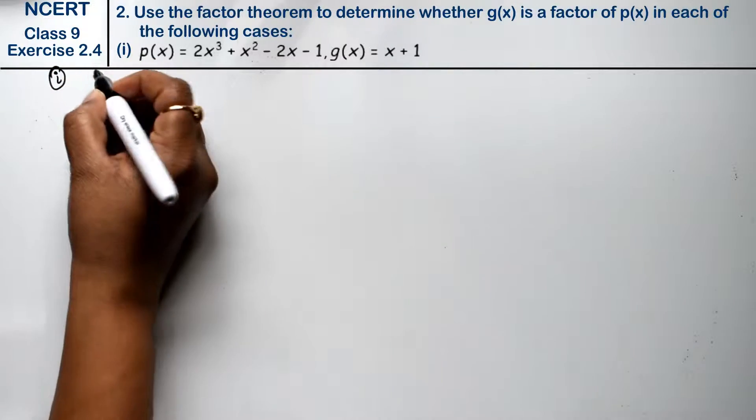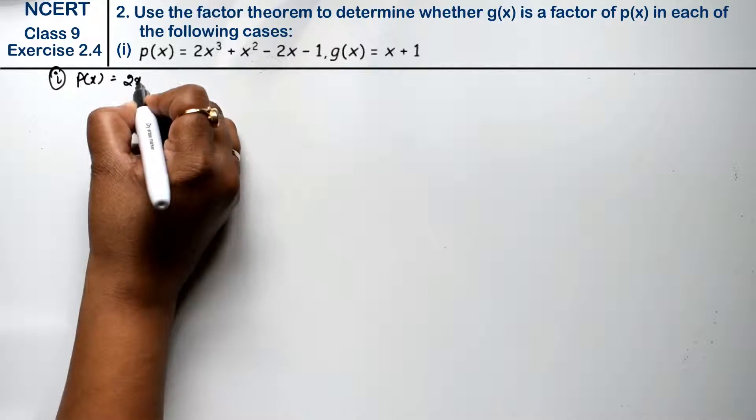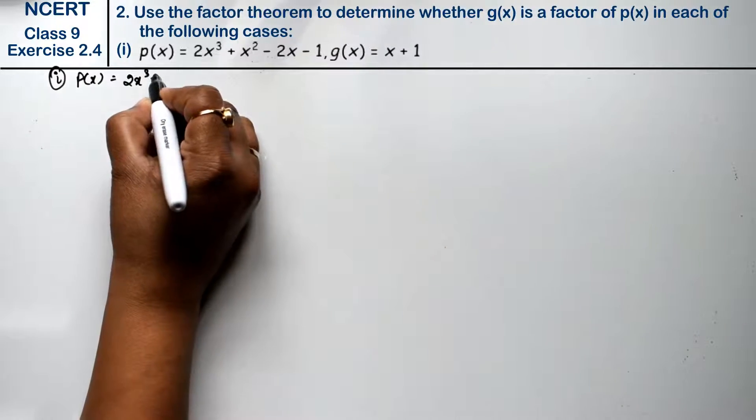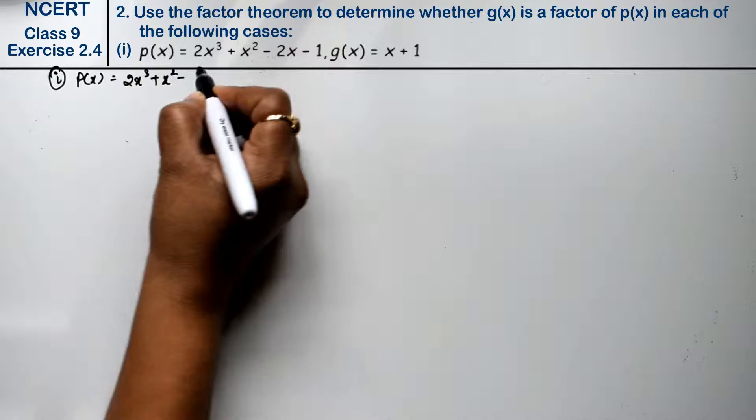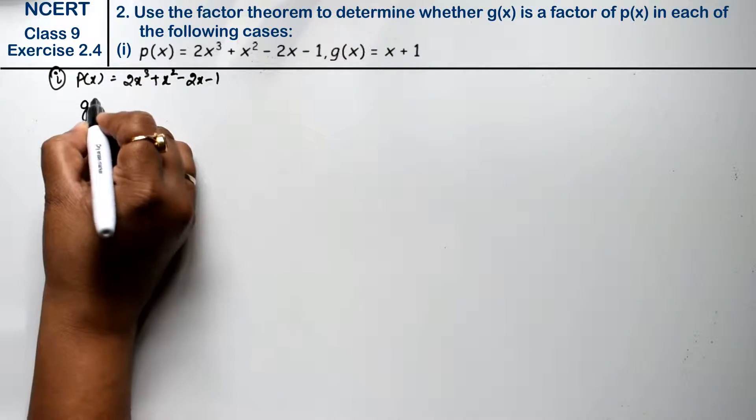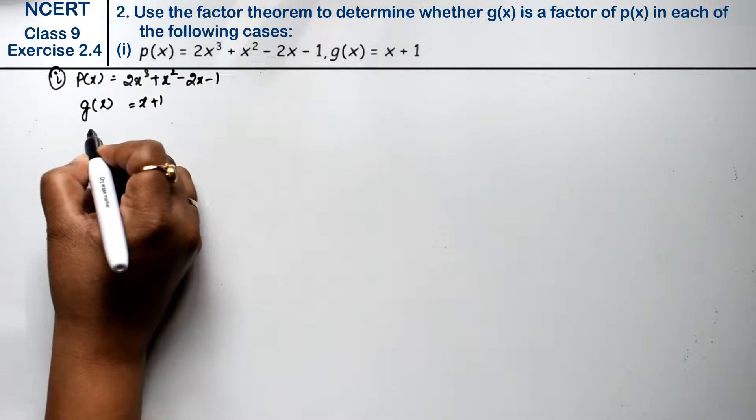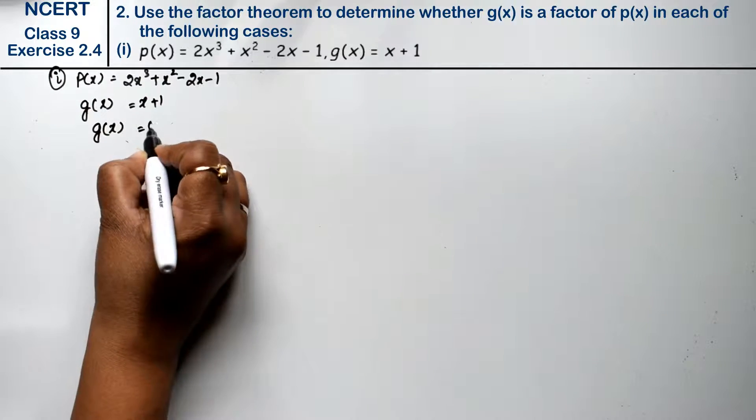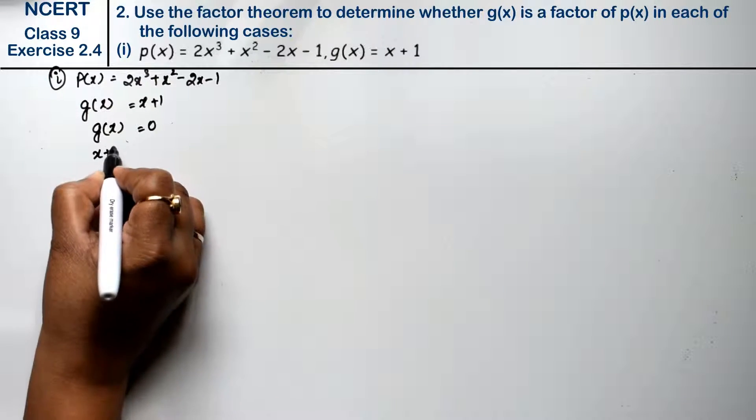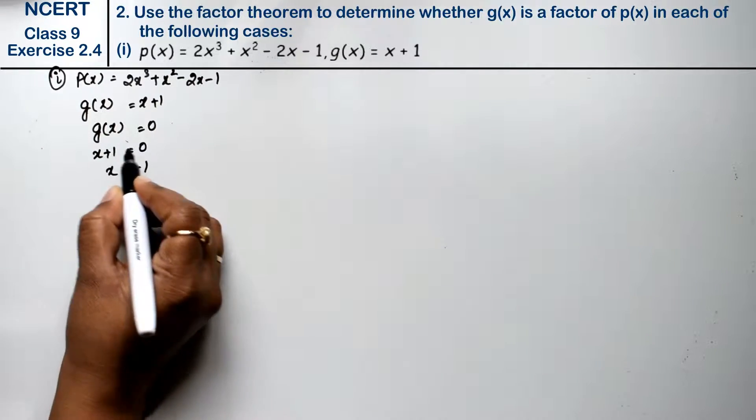First part: we have p(x) = 2x³ + x² - 2x - 1 and g(x) = x + 1. So what do we do? g(x) equals 0. So x + 1 = 0, then x value is -1, because plus here becomes minus. Now we have to put this value here.